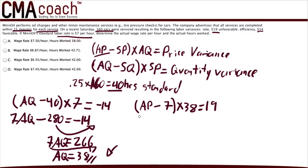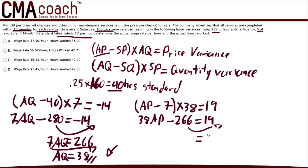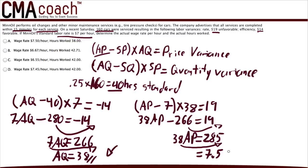Solving for AP: 38·AP minus 7 times 38 (which is 266) equals 19. Moving 266 to the other side gives 38·AP equals 285. The formula now reads 38·AP equals 285.